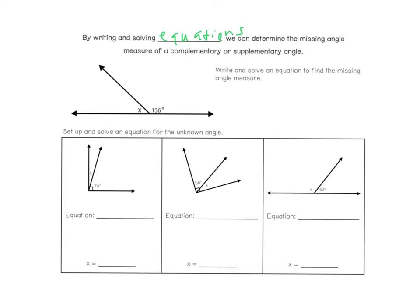By writing and solving equations, we can determine the missing angle measure of a complementary or supplementary angle. Here we'll practice writing the equations. Looking at the first one, I have X and 136 degrees. You could just say 180 minus 136, but I want you to practice setting up equations for more complex problems down the road. Since it's supplementary, I say X plus 136 equals 180, subtract 136 from both sides, and 180 minus 136 gives us 44 degrees.